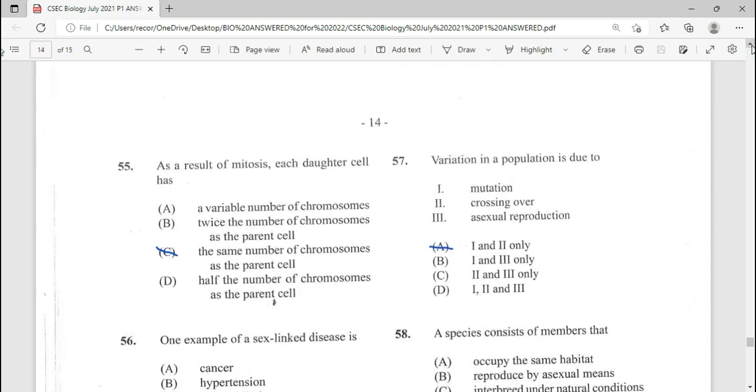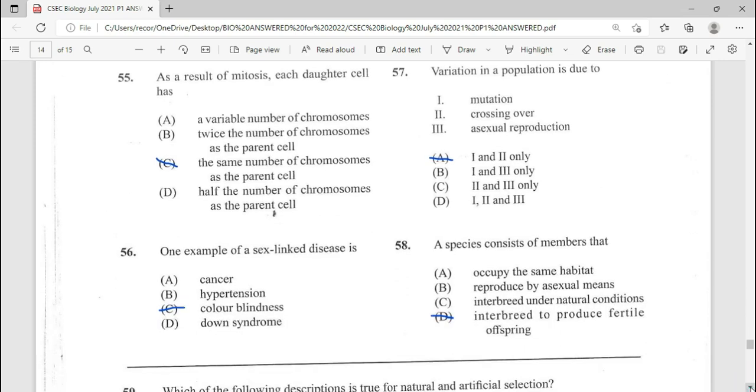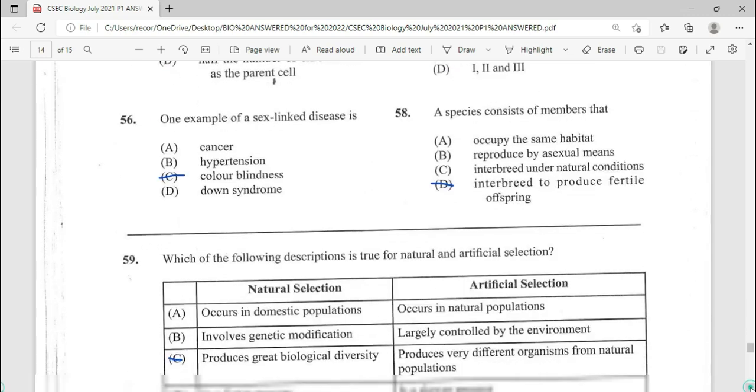Move on to 57. Variation in a population is due to, and this is a repeated question. D being the answer. Remember you can stop the video at any time and of course read.